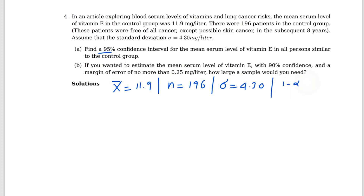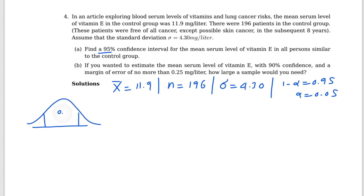For 95%, 1 minus alpha equals 0.95, so alpha equals 0.05. You already know how to find z-star for 95%, so I will just draw the normal curve. The middle area is 0.95. z-star is positive 1.96 and negative z-star is negative 1.96.